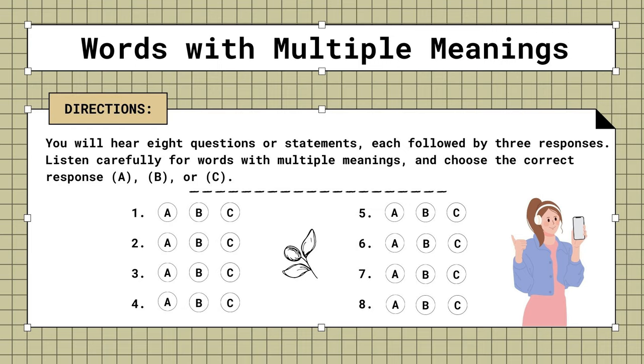3. The accountancy exam was very hard. A. Nobody could use it. B. Only five people passed. C. I couldn't move it at all.